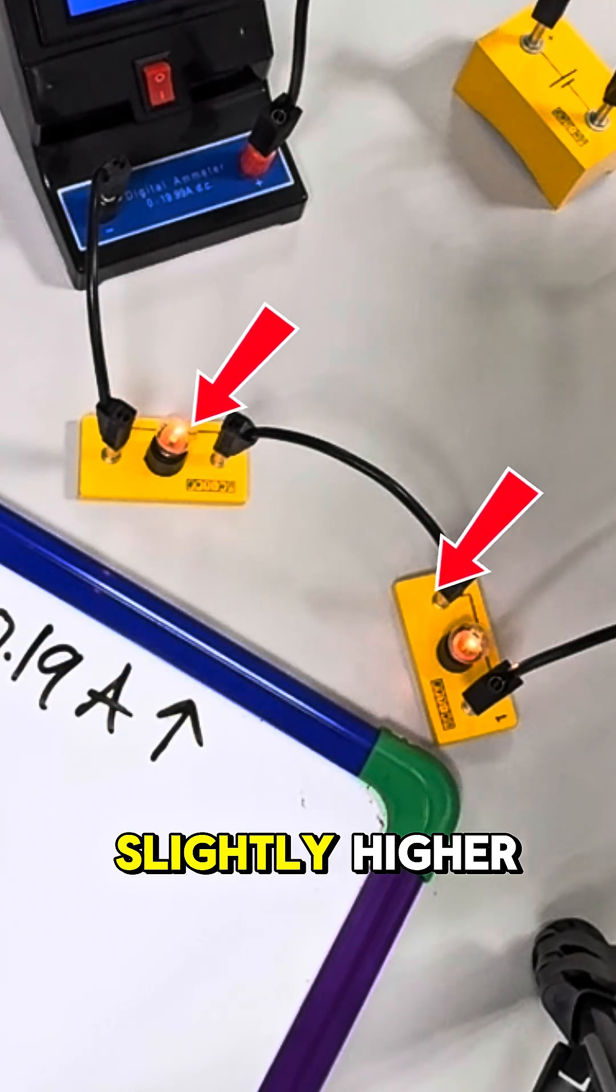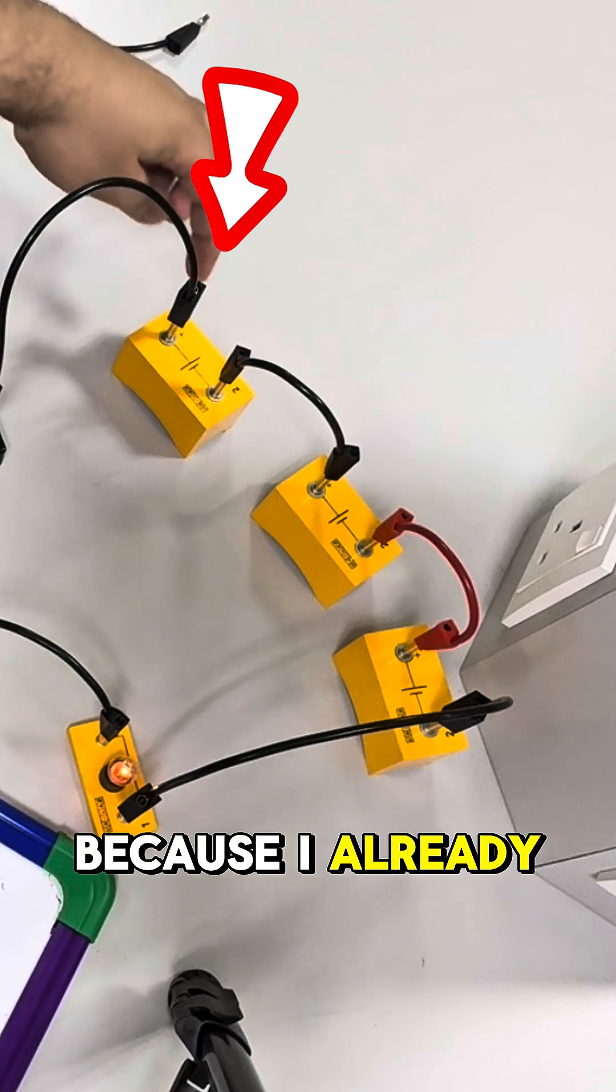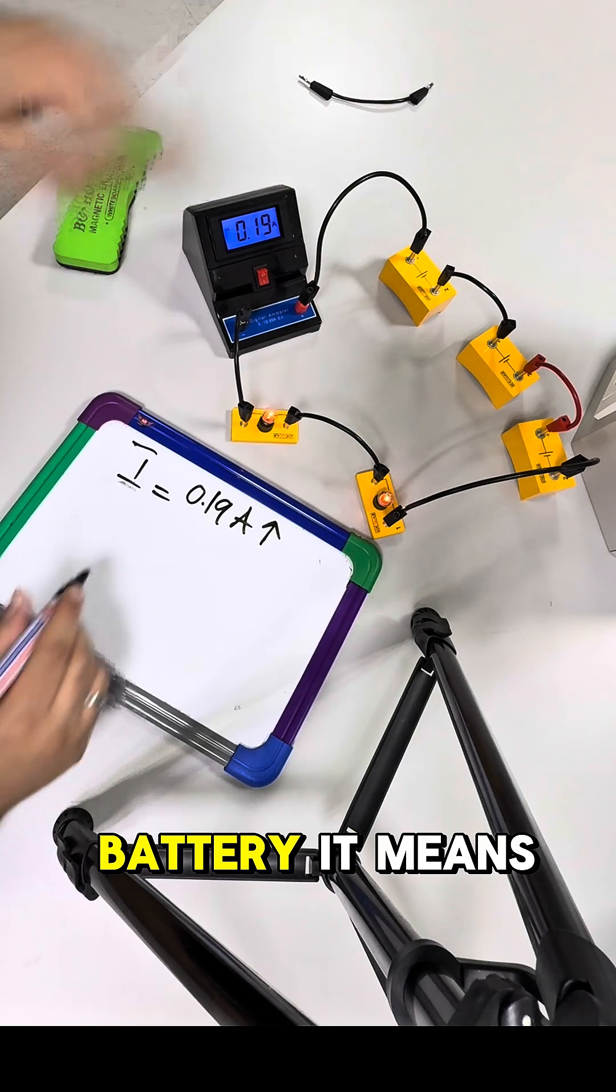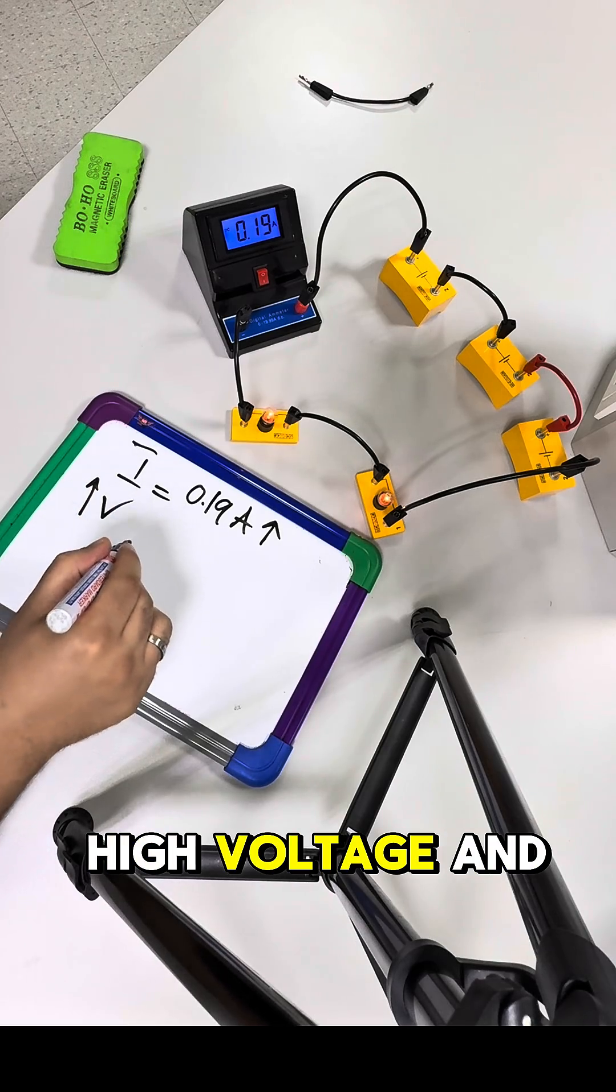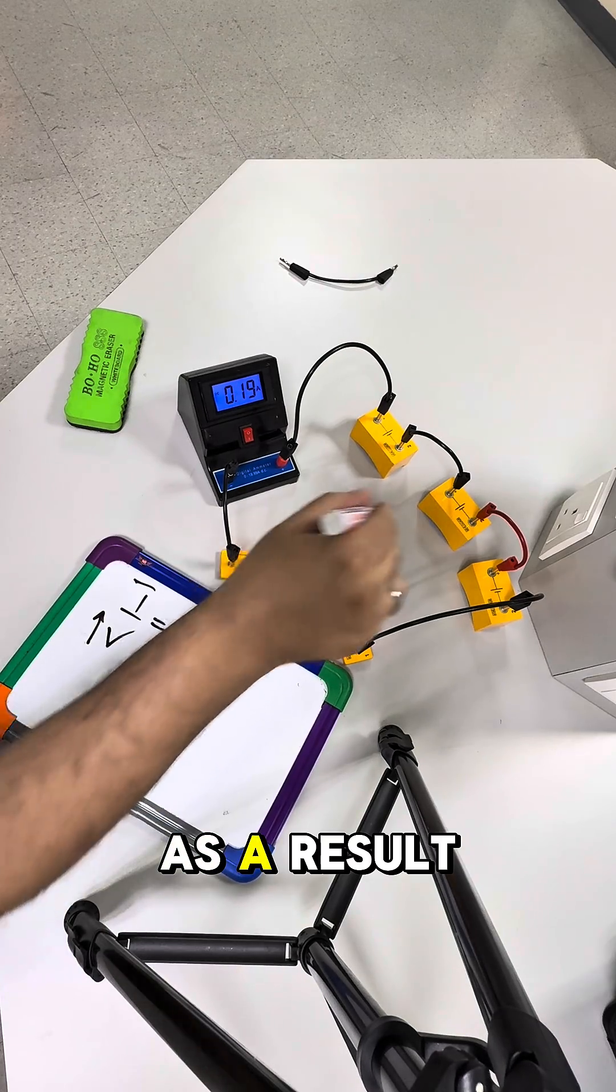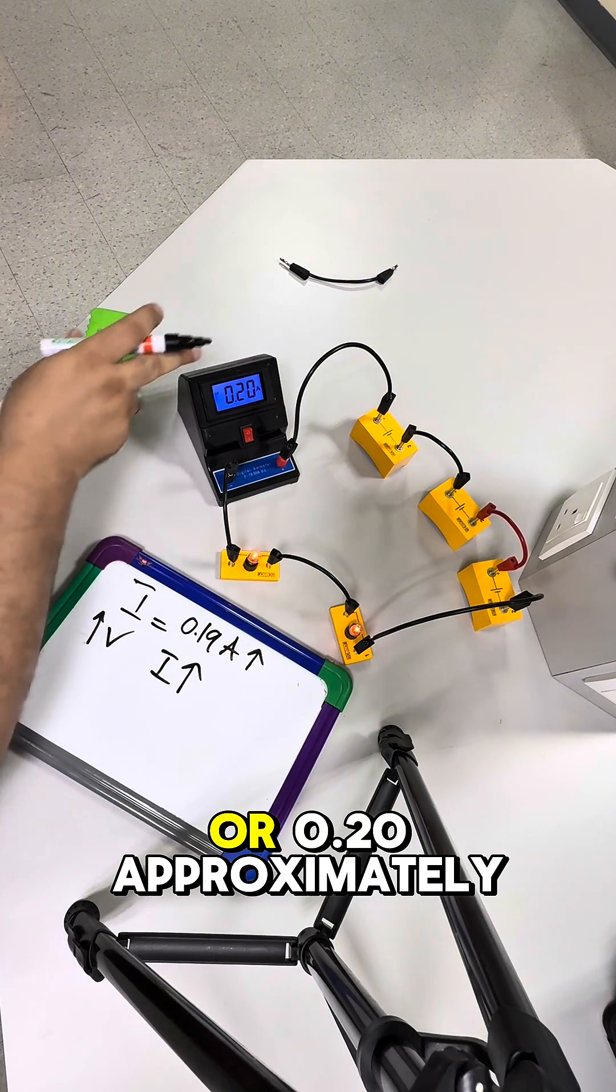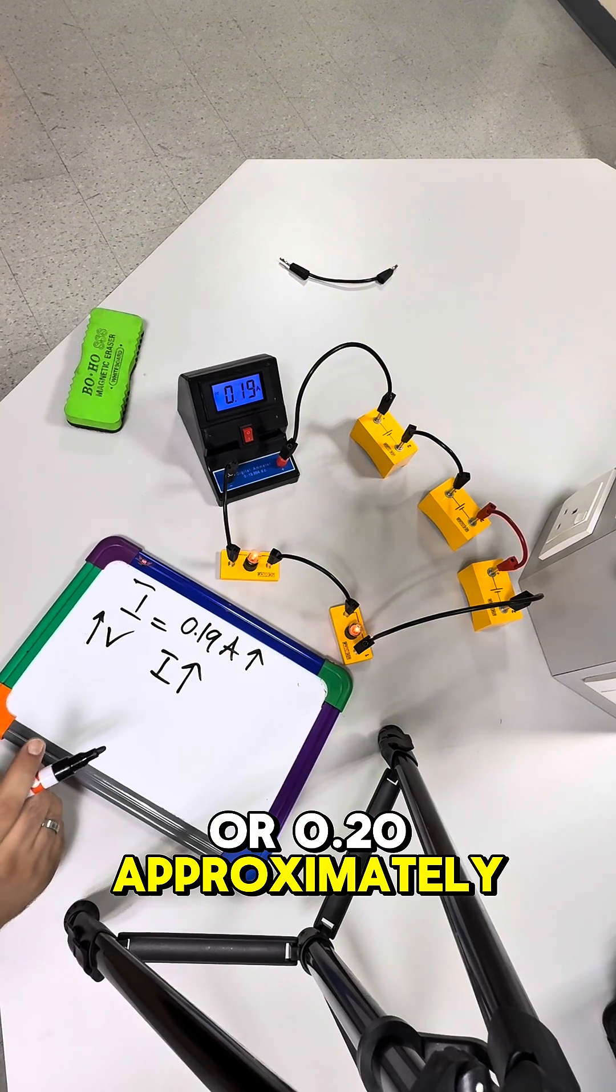And the brightness of the lamp is slightly higher because I already added here one more battery. So one more battery means higher voltage, and as a result we have higher current, which is 0.19 or 0.20 approximately ampere.